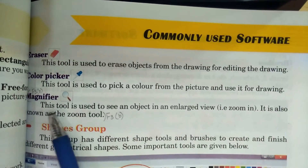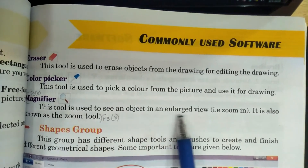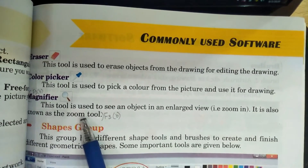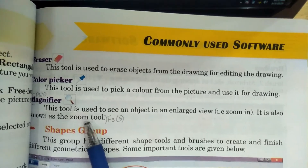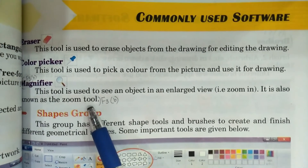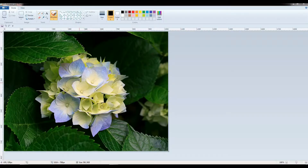Magnifier — this tool is used to see an object in an enlarged view. It is also known as the zoom tool. Now we will practically use these tools. Students, as you can see, this is the tool group.